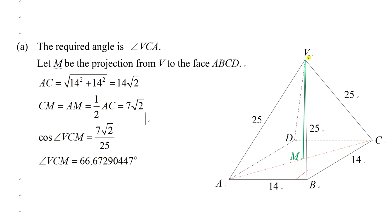VM is perpendicular to the face ABCD, therefore angle VMC is a right angle. We can use cosine: angle VCM equals MC, which is 7 root 2, over VC, which is 25. So angle VCM equals 66.67 degrees. That finishes part A.